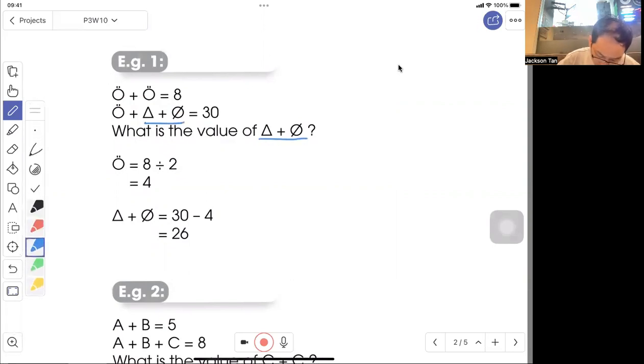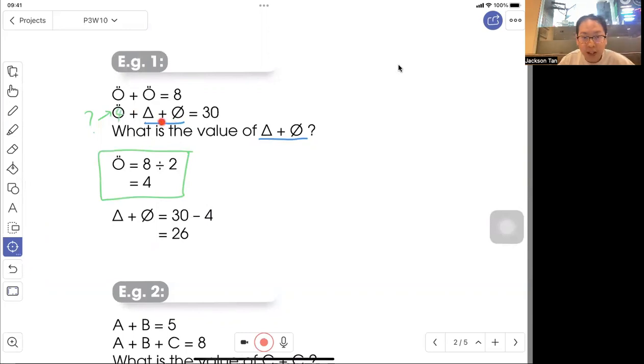First, do we know what is here? No, we don't know. But we can take eight divided by two to get this thing is four. So now we know that this is four. So thirty minus four, you have the answer for this. That is twenty-six.